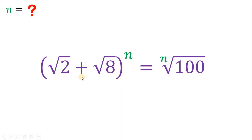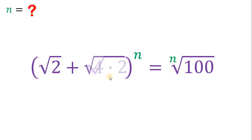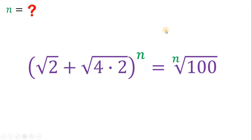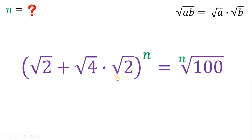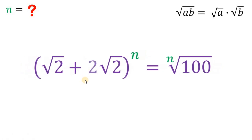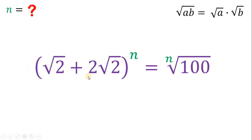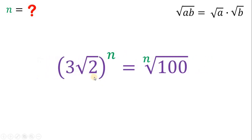Take note that square root of 8 is just the square root of 4 times 2. Using the law of radicals, square root of a times b is equivalent to square root of a times square root of b. Therefore, square root of 4 times 2 can be written as square root of 4 times square root of 2. Since square root of 4 is just 2, we now have square root of 2 plus 2 times square root of 2. Since they are similar, we can combine them: that gives us 3 times square root of 2.